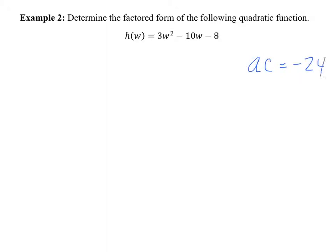I start by listing AC and I list the product of the first and last term's coefficients. I then find the factors of AC that add up to B — the same process we just did. Factor the number negative 24, and figure out which of those sets of factors adds up to negative 10. I'm going to write them all out; I know some of you know it right away.